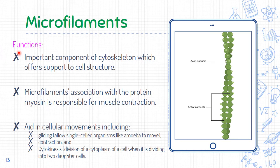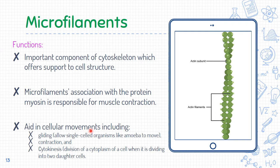Microfilaments are important components of the cytoskeleton offering structural support. They associate with another protein component, myosin. Together, actin and myosin are responsible for muscle contraction. Microfilaments also aid in cellular movement including gliding, which allows single-cell organisms such as amoeba to move by pseudopodium. They also aid in muscle contractions and in cytokinesis during cell division, where the cytoplasm is divided into two daughter cells.